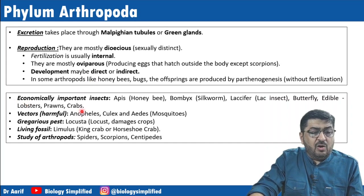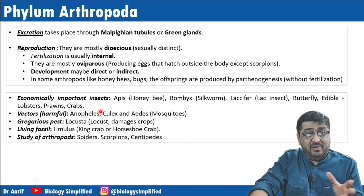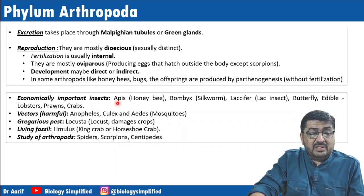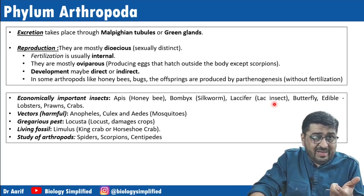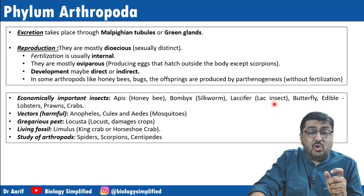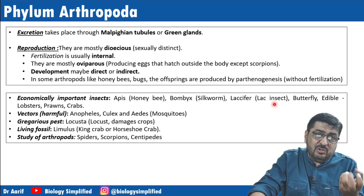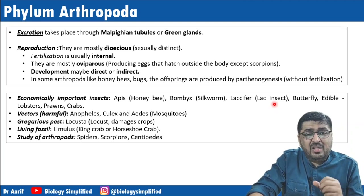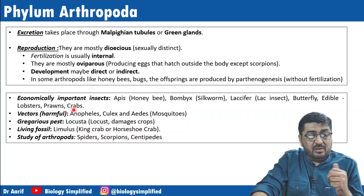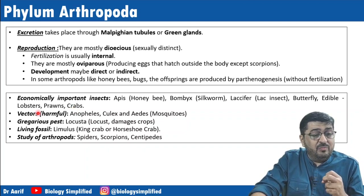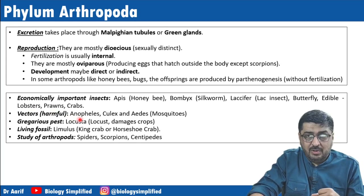Arthropoda contains many economically important organisms. We have Apis, which is honeybee; Bombyx, which is silkworm; Laccifer, which is a lac insect — the female secretes lac, which is useful in many industries. Edible arthropods include lobsters, prawns, and crabs, which are popular seafood.